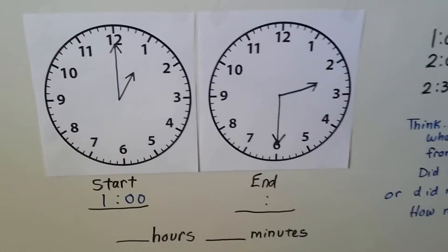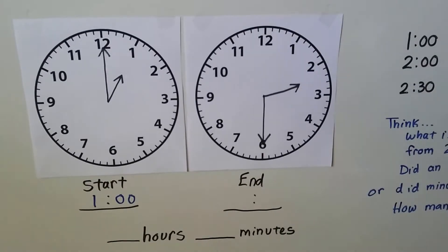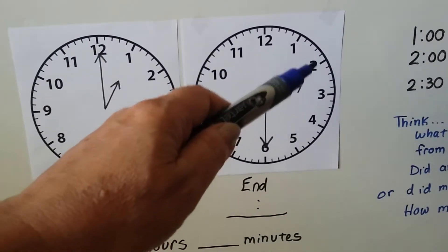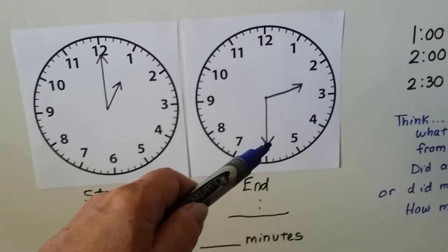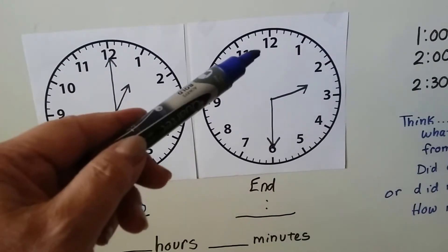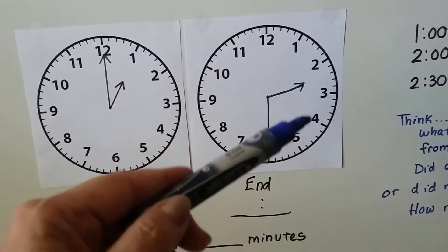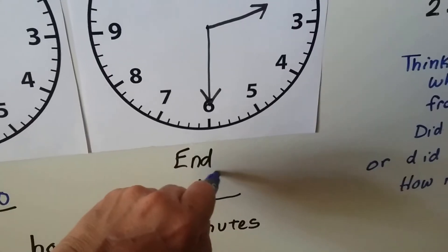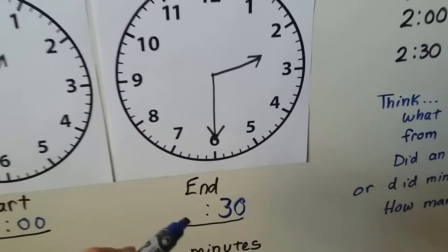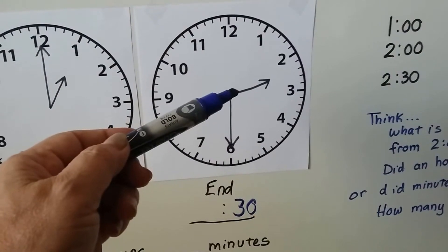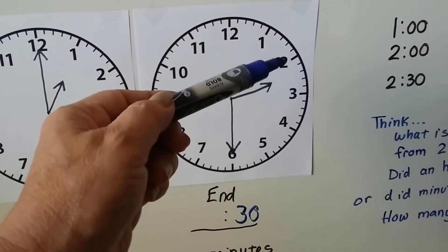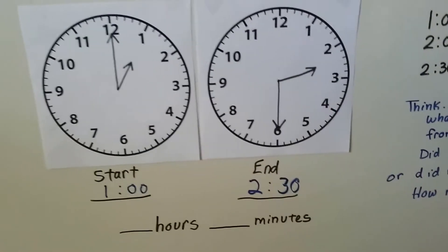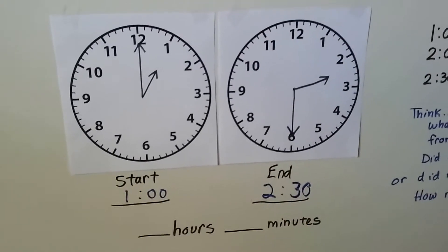Now we figure out the end clock time. The hour hand is between the two and the three, and the minute hand is on the two. We count by fives for the minute hand: five, ten, fifteen, twenty, twenty-five, thirty — so the minutes are thirty. The hour hand hasn't reached the three yet, so it's still at two. Our ending time is two-thirty.